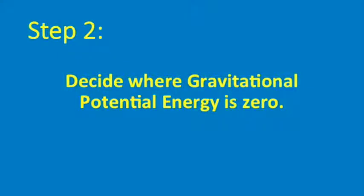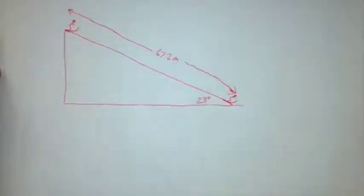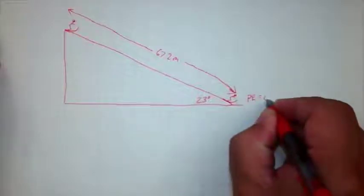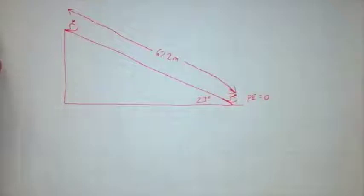Step two, when solving problems using energy methods, is to decide where zero gravitational potential energy is. This is another one of the many arbitrary decisions we have to make as part of the problem-solving process. That can be anywhere we wish it to be. We just have to choose where zero potential energy is, and then stick with that. In general, a good strategy is to have zero potential energy be the lowest point that the object ever gets in its motion. That way, you don't have to worry about negative values for potential energy. So a good place for us to have zero potential energy is here at the bottom of the slope, where the height is zero.